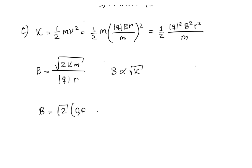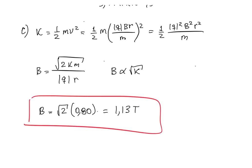The new magnetic field is √2 times the initial value of 0.80 Tesla, which gives 1.13 Tesla. That's the solution for part C of this problem.